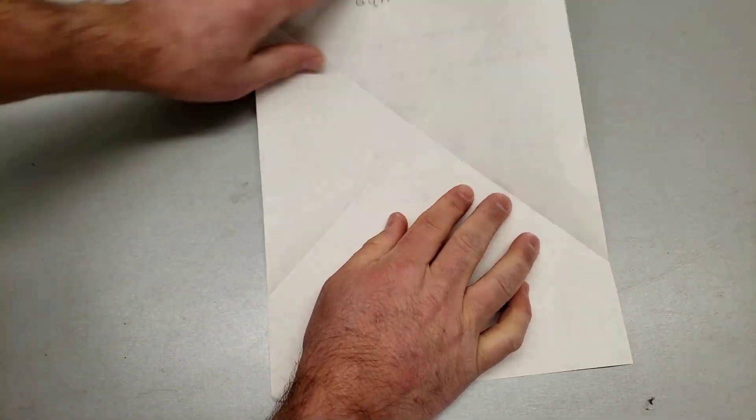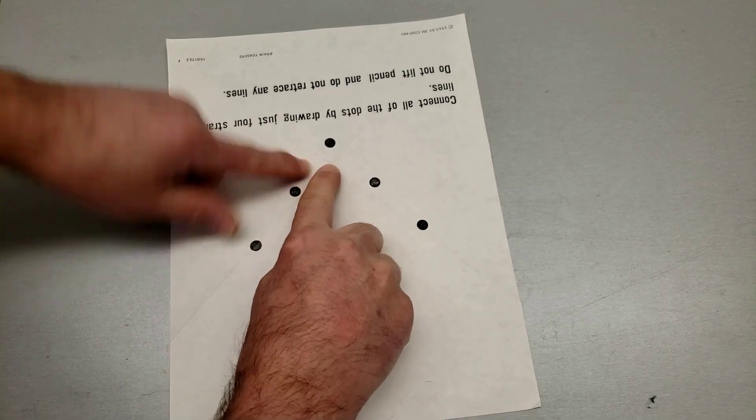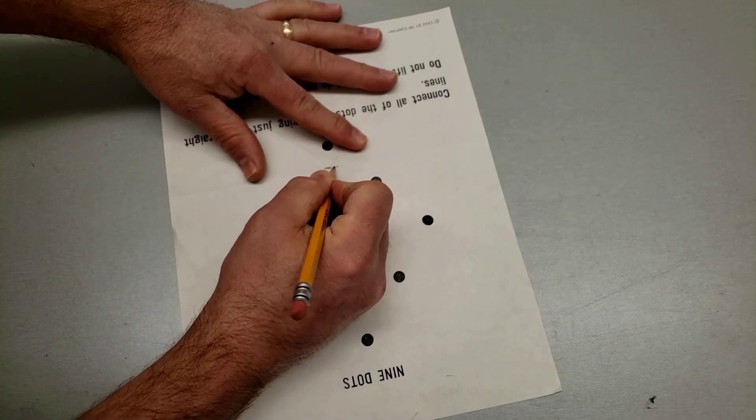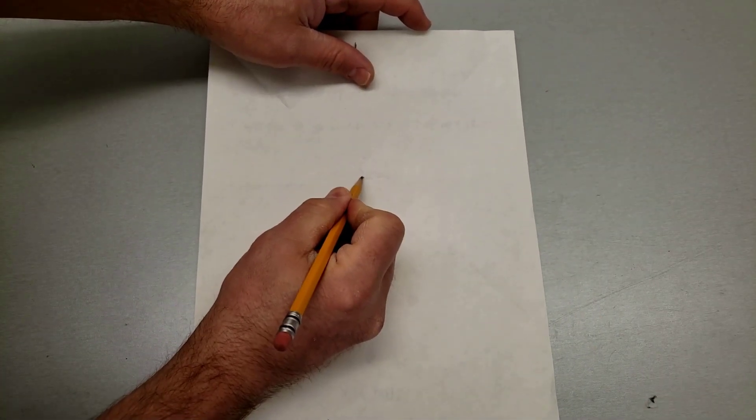The third fold is to flip it over and then we're gonna cross it at this spot right here. So I'm gonna make my life easier by marking it in the middle so I can see it.